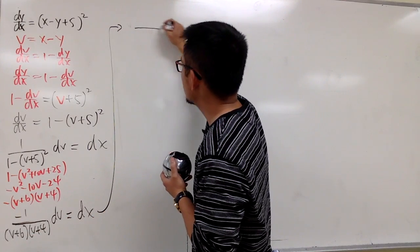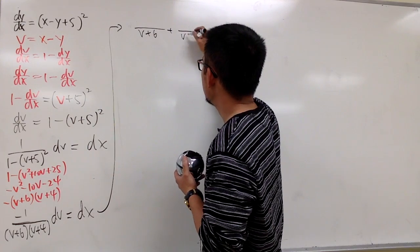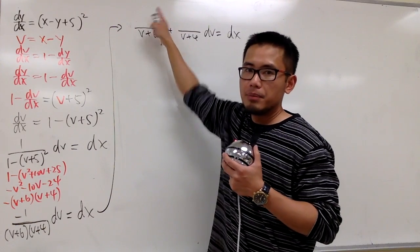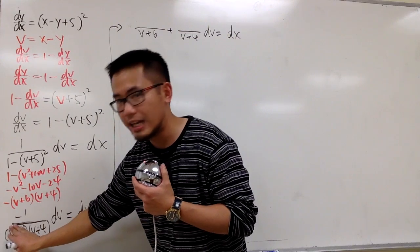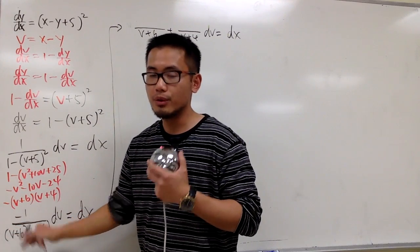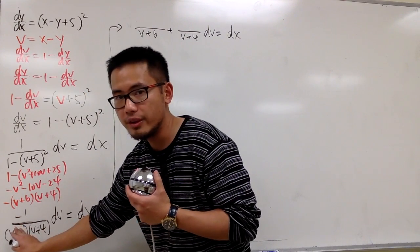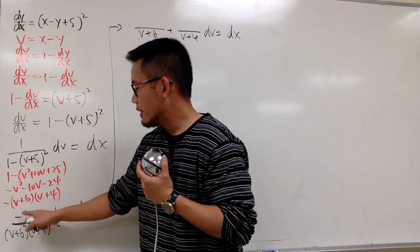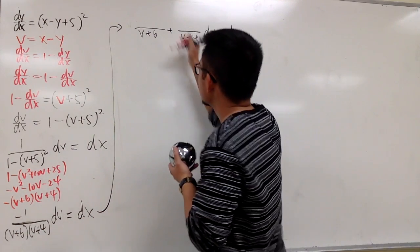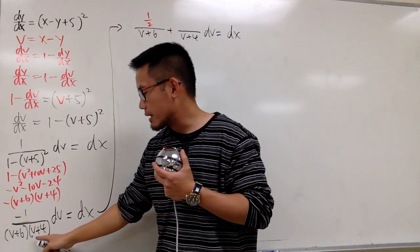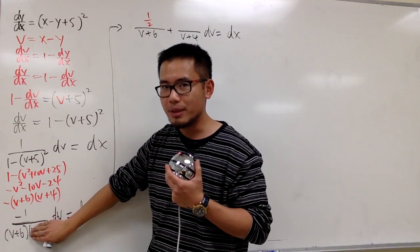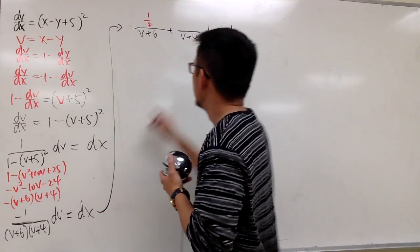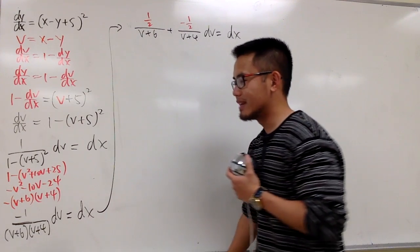Setting up partial fractions with factors (v + 6) and (v + 4). Using the cover-up method: plug v = -6 into the remaining factor to get -1/(-6 + 4) = -1/(-2) = +1/2. For the (v + 4) term, plug v = -4: -1/(-4 + 6) = -1/2. So we have 1/2 over (v + 6) and -1/2 over (v + 4).